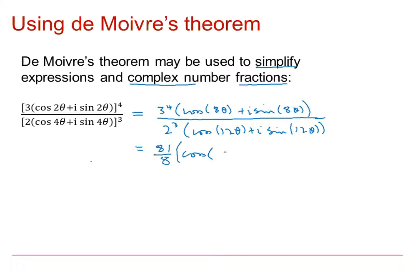So this becomes the cos of 8 theta take away 12 theta is minus 4 theta plus i sine 8 theta take away 12 theta is minus 4 theta.